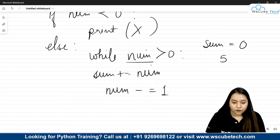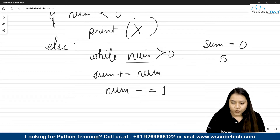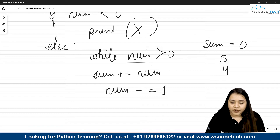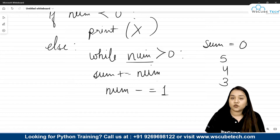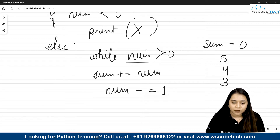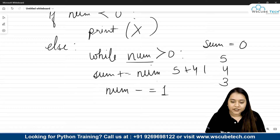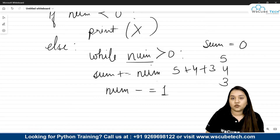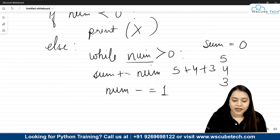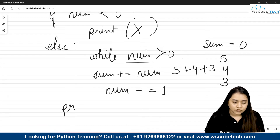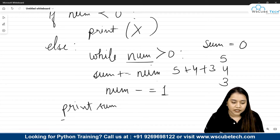After every iteration, one number will be reduced. So starting at 5, the next iteration gives 4, then 3, then 2, then 1. Each time the current value is added to sum: sum becomes 5, then plus 4, then plus 3, then plus 2, then plus 1. This is how we add the sum of all natural numbers. In the end, we print the sum.